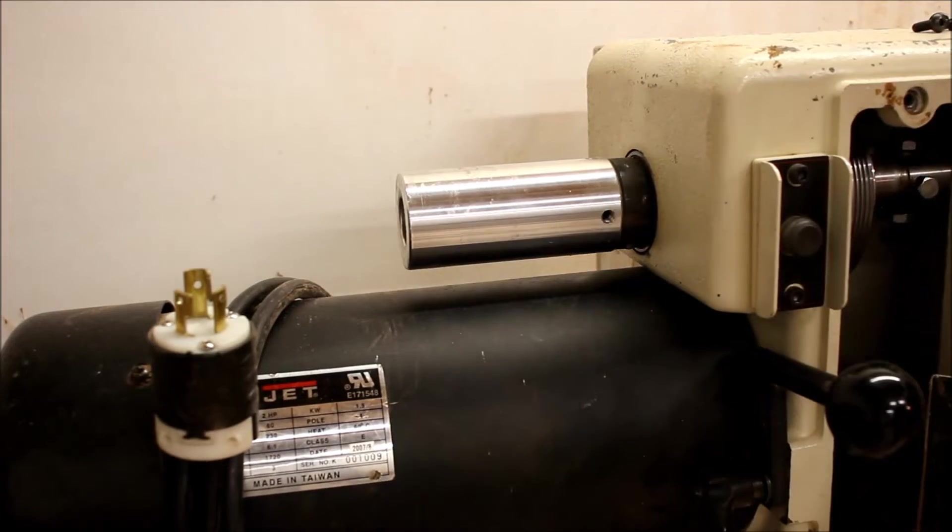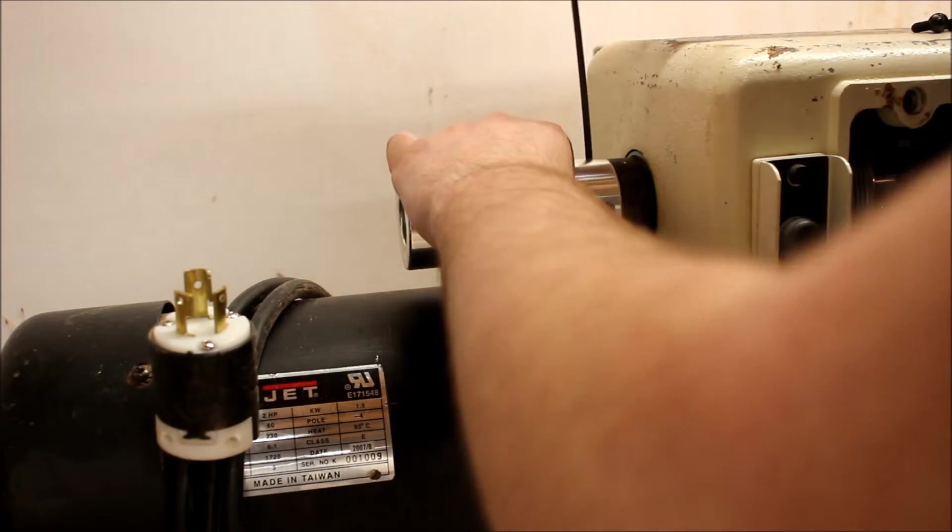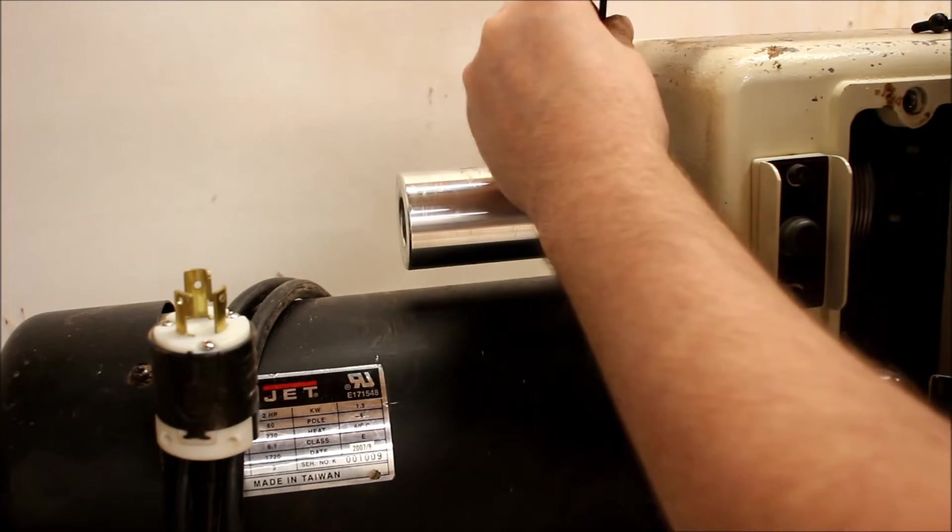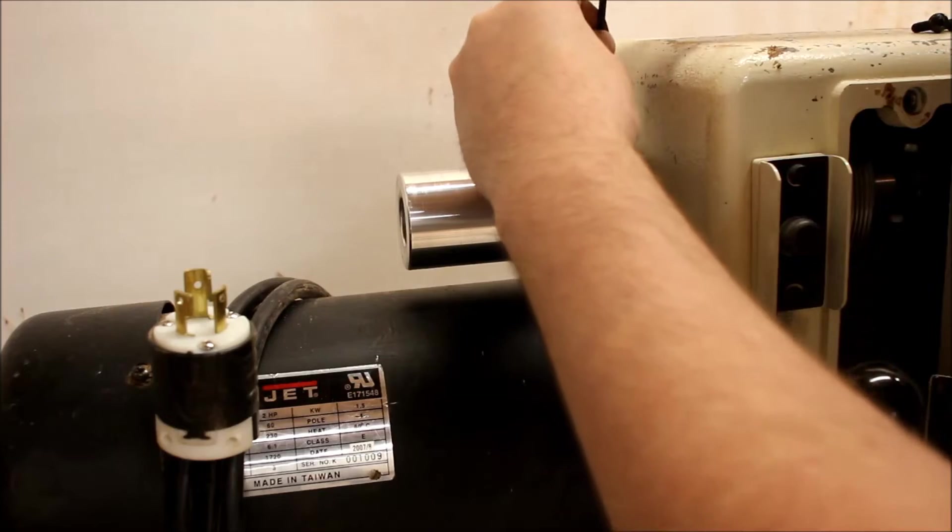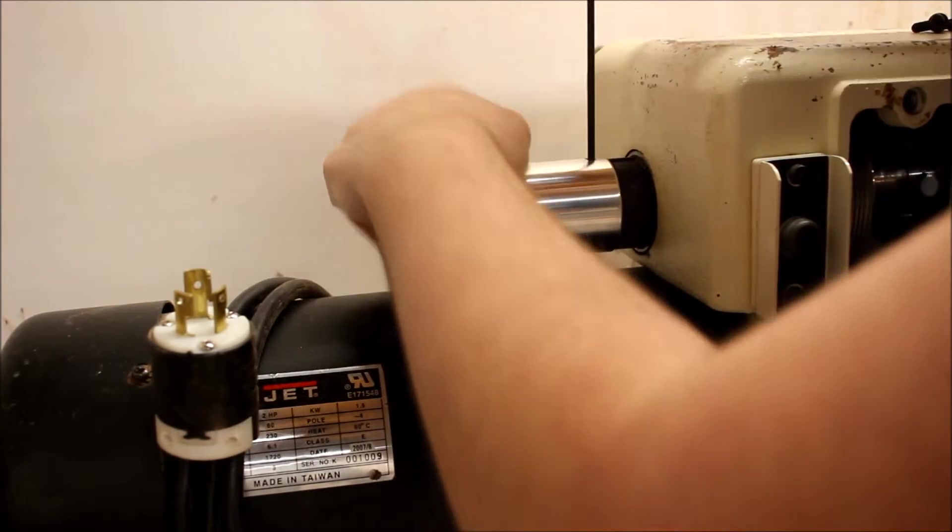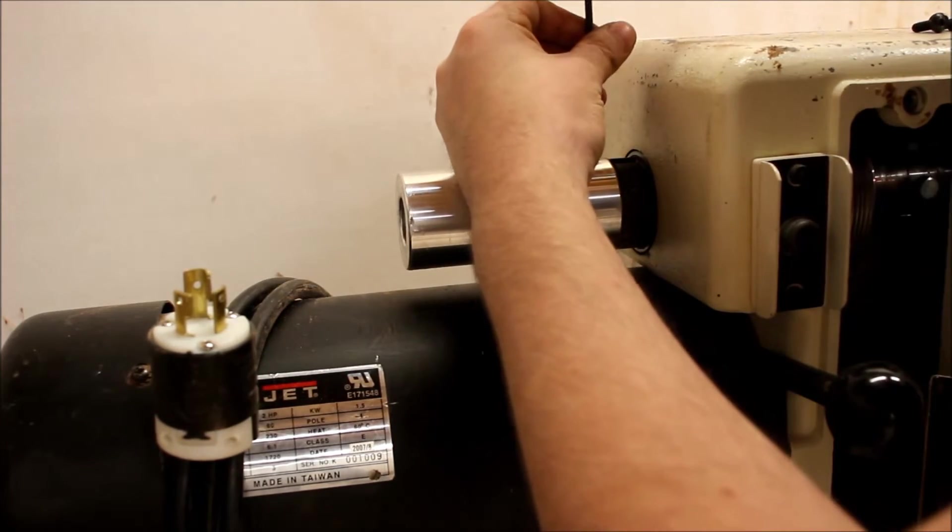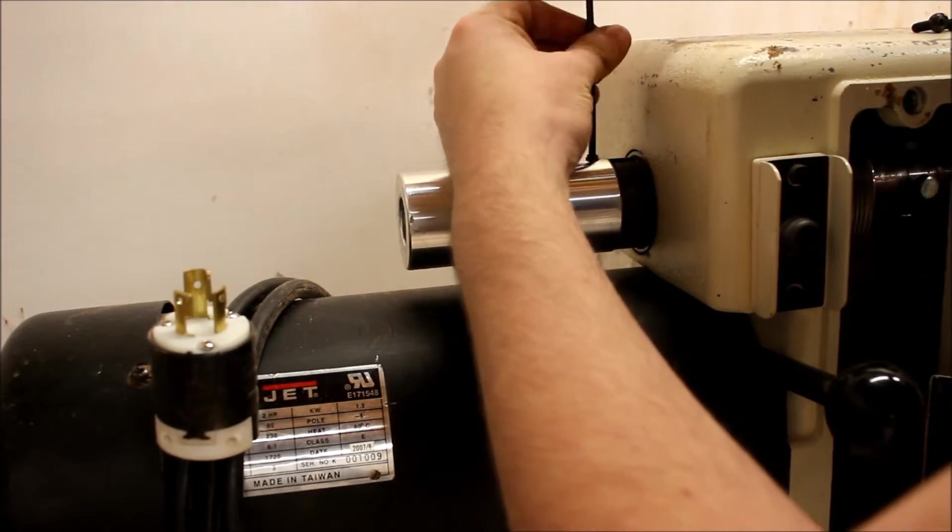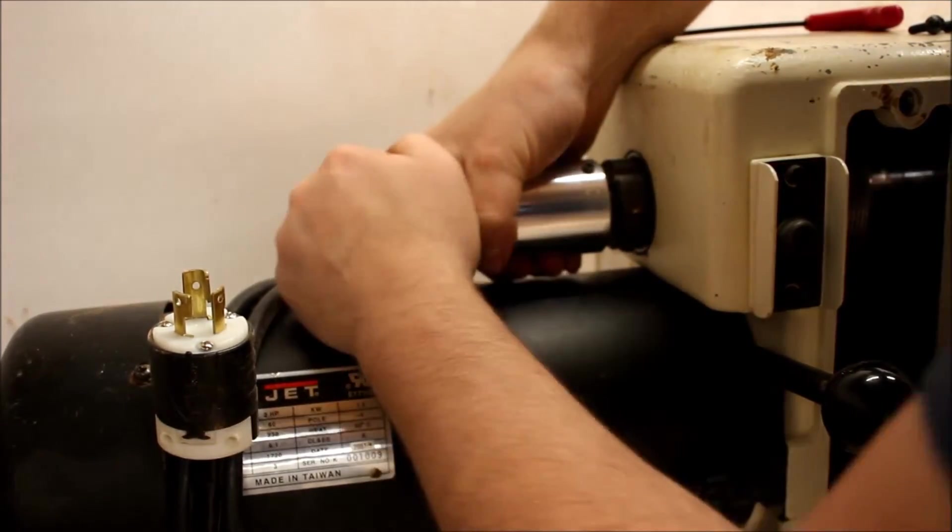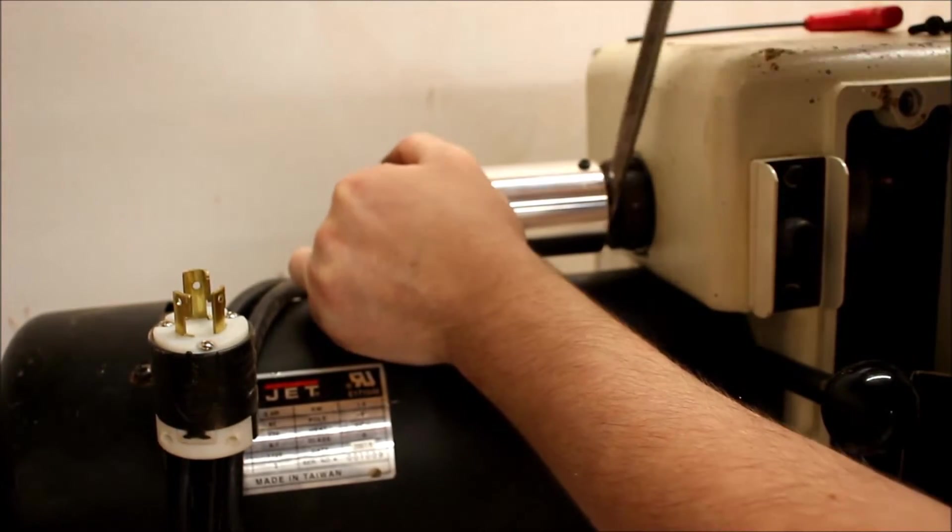So we're going to start with this end for our disassembly. We're going to take our hand wheel off and this has two set screws so we'll go ahead and back those out almost all the way. This should just slide off, you may have to gently pry on it a little bit.